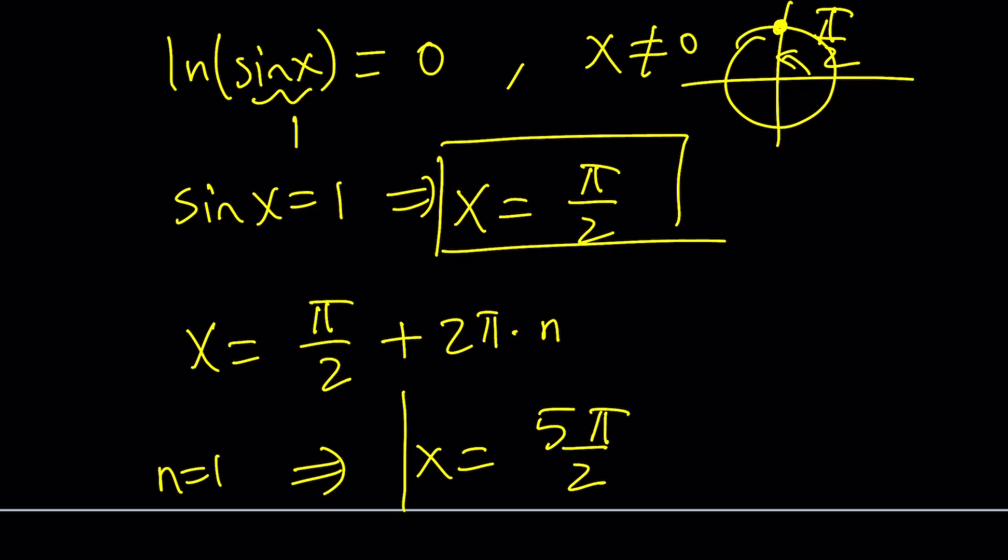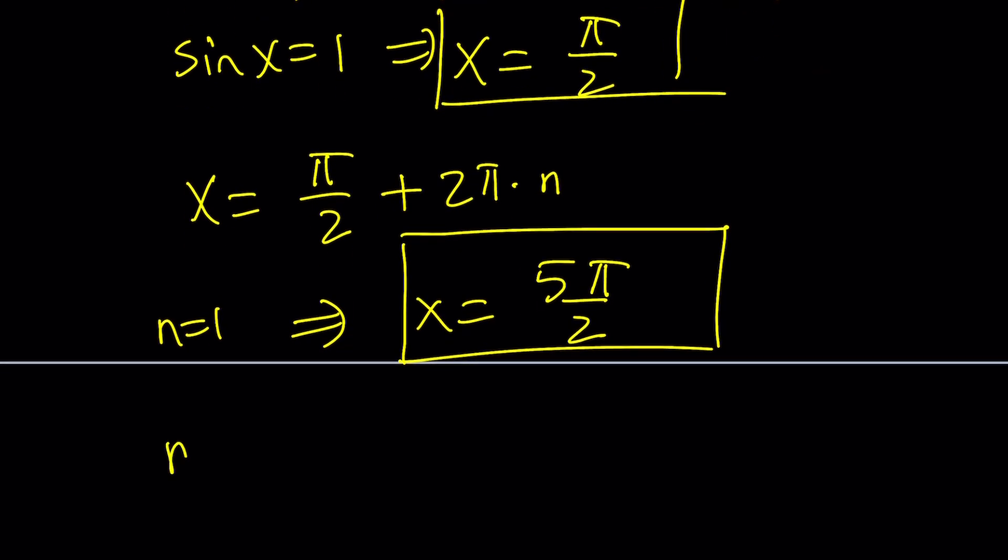So if you think about it, 5 pi over 2 is still less than 10, but if you set n equals 2, then you get a high value. Let's go ahead and do it. n equals 2 gives us pi over 2 plus 4 pi, which is 9 pi over 2. And you probably know that 9 pi over 2, if you think about it, 9 over 2 is greater than 4. So this is greater than 4 pi, and obviously pi is greater than 3, so 4 pi is greater than 12, and 12 is greater than 10. So this is greater than 10, so we have to stop here.